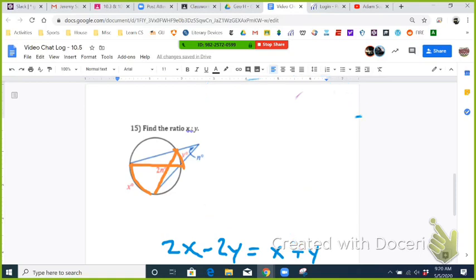So I have to find the ratio of x to y. So I just have to get an expression where it's like x divided by y. So what I'm going to do is get my x's on one side, so subtract x on both sides, and I get x. And I get my y's on the other side. So I'm going to add 2y to both sides. So I get x is equal to 3y.